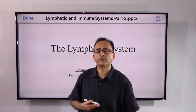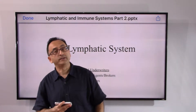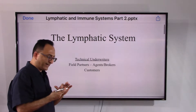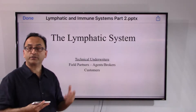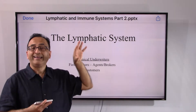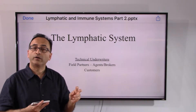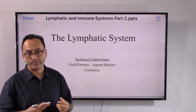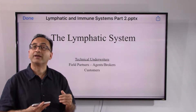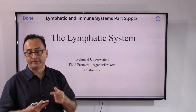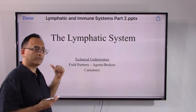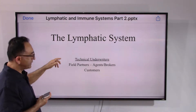Welcome back. Let's continue with the lymphatic and immune system, starting with the lymphatic system. In the last video we talked about the circulatory system — from a broader standpoint it encompasses the cardiovascular system and the lymphatic system. The lymphatic system has broadly speaking three functions, one being immunity, which leads to the immune system. For now we focus on the lymphatic system.